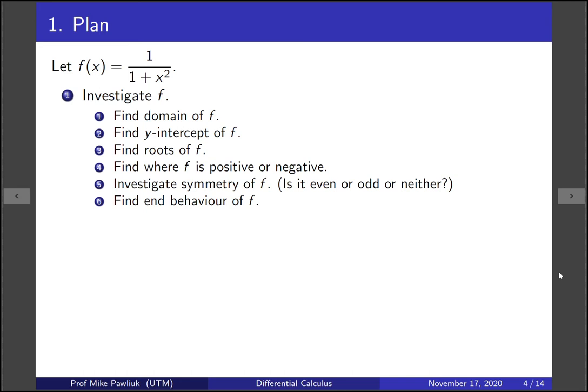Our plan is as follows. If f is the function 1 over 1 plus x squared, we're going to start by investigating f itself — finding the domain, the y-intercept, the roots, and where f is positive and negative. We'll investigate the symmetry of f, meaning whether it is even, odd, or neither, and then we'll find the end behavior of f. All of this will be discovered just from f itself, without derivatives.